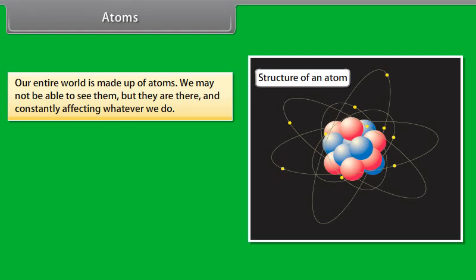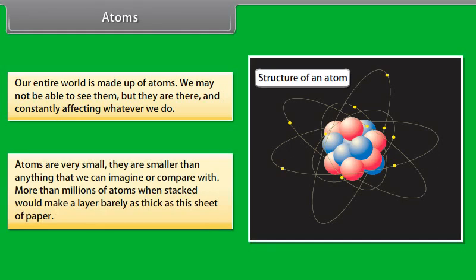5. Atoms combine in the ratio of small whole numbers to form compounds. 6. The relative number and kinds of atoms are constant in a given compound.